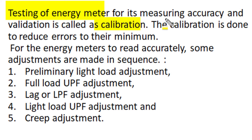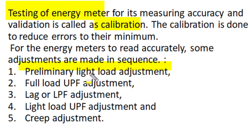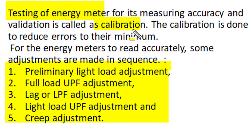Testing of an energy meter for measuring accuracy and validation of that accuracy is called calibration. Calibration is done to reduce errors to a minimum. For accurate measurement, adjustments are made in a specific sequence: first, preliminary light load adjustment; then full load at unity power factor; then full load at 0.5 lagging power factor; then light load at unity power factor; and finally, creep adjustment is tested.